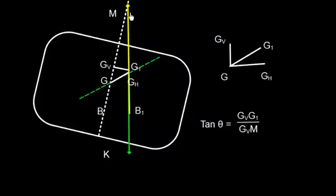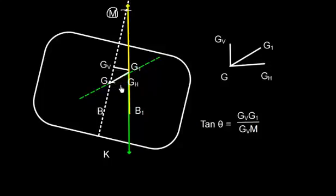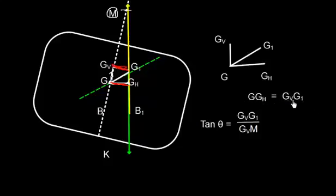This new force of buoyancy will cut the center line at M, which is called the metacenter. G shifted to G1, with components GGH (horizontal) and GGV (vertical). From basic trigonometry, this forms a right angle triangle, so tan θ = GV_G1 divided by GV_M.